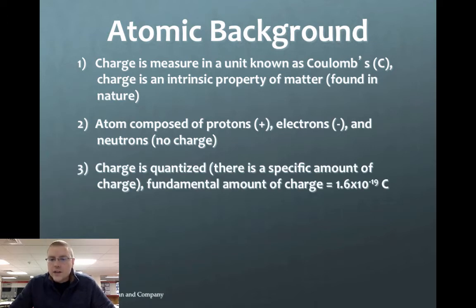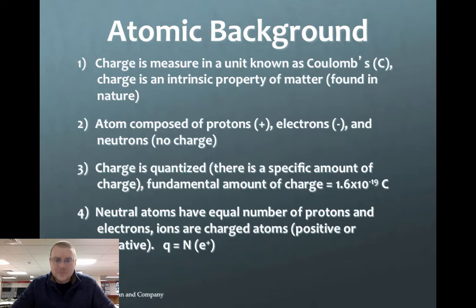Charge is quantized, meaning there's a specific amount of charge. And the fundamental amount of charge is about 1.6 to the negative 19th coulombs. So it's a very small amount, but there is a specific quantized amount of charge for every proton, electron out there. And if I want to know the total charge on something, well, neutral atoms have equal protons and equal electrons. So if they have five protons, they usually have five electrons and cancel themselves out.